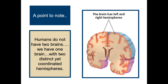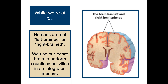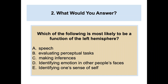Humans do not have two brains — we have one brain with two distinct yet coordinated hemispheres. We are not right-brained or left-brained, no matter what tests you've seen on social media. We use our entire brain to perform countless activities in an integrated manner. For the practice question asking which function is most likely tied to the left hemisphere, the answer is speech, which seems most likely for most people.